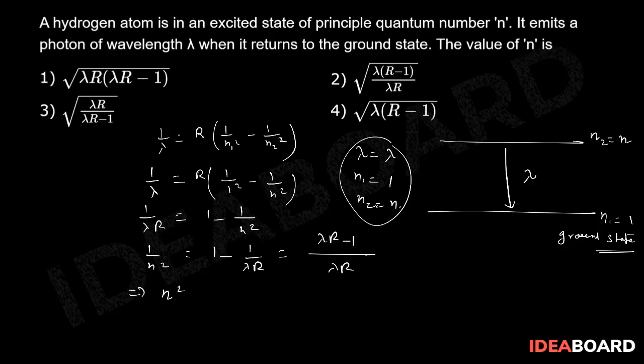If you take the reciprocal, N square by 1 is equal to lambda R upon lambda R minus 1. Eventually N is equal to under root of lambda R upon lambda R minus 1.